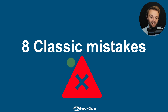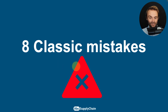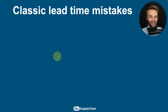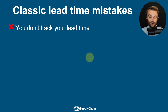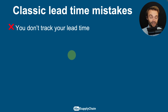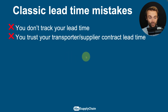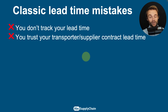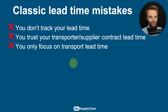I'm going to share eight classic mistakes I have seen with my ABC Supply Chain members. First, you don't track your lead time — I see many small and big companies not even tracking lead time today. Second, you trust too much your transporter or supplier contract lead time. It doesn't mean that if your supplier says 20 days, that's the real number. You should definitely verify and update this number.